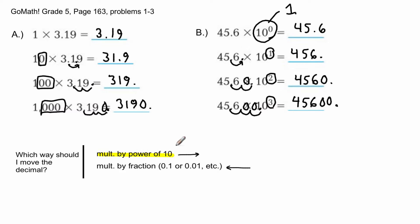So to summarize: if multiplying by powers of ten, move the decimal to the right. If you see zeros in the multiplier, move the decimal that many spaces to the right. If you see an exponent, the exponent tells you how many places to move the decimal to the right.